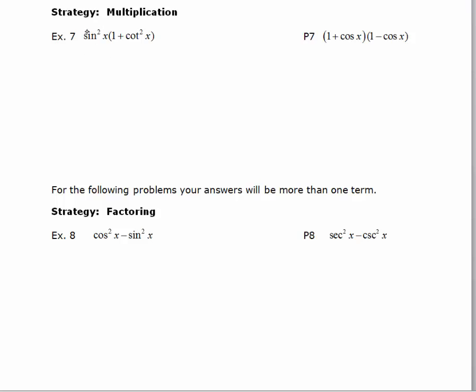So I start by multiplying the sine squared times 1 and the sine squared times the cosine squared. This gives me sine squared x plus sine squared x cotan squared x. The next step I would rewrite in terms of sine and cosine to see if we can simplify. Rewriting cotan as cosine squared over sine squared.